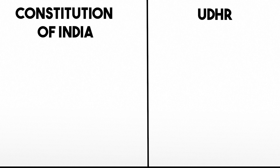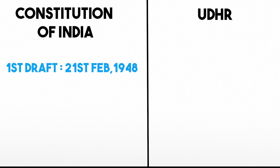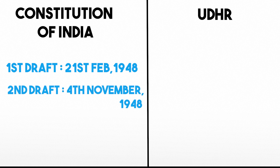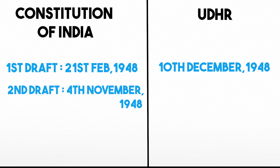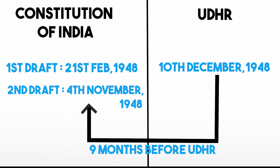Generally it is said that fundamental rights and directive principles of state policy are influenced by UDHR. But this is not entirely true. The first draft of the constitution was submitted to the Constituent Assembly on 21st February 1948 and the second draft on 4th November 1948 — both before the adoption of UDHR. Almost all the fundamental rights, most of which correspond with UDHR, had already been discussed and debated in the first and second draft of the constitution, 9 months before the adoption of UDHR.